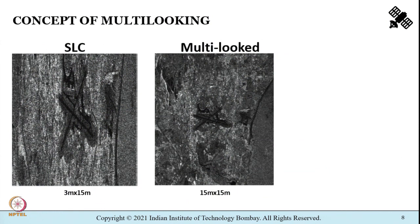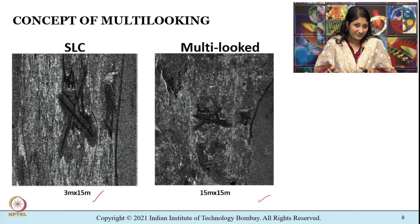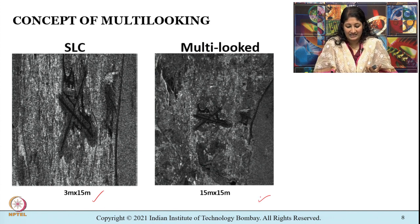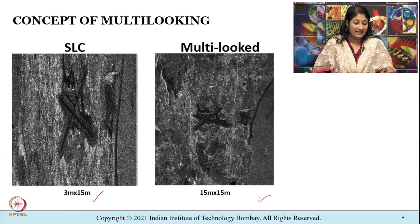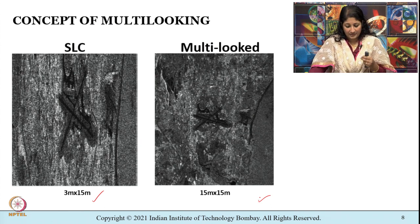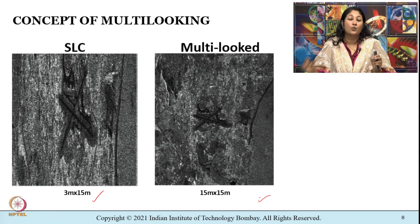Let me start with the concept of multi-looking. What you see on the screen towards the left side is an SLC image — single look complex image — and what you see on the right side is a multi-looked image. Both represent the same geographical region. Visually, a multi-looked image feels better than an SLC image. Let us understand the concept of multi-looking and why it is important when trying to understand speckle.